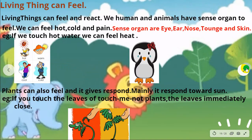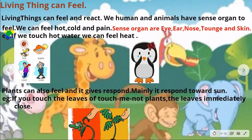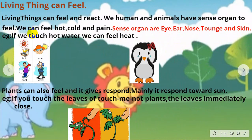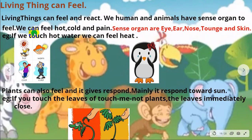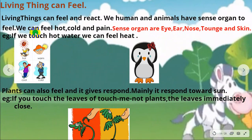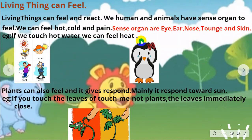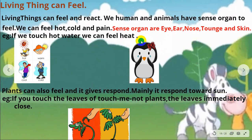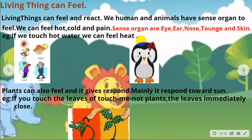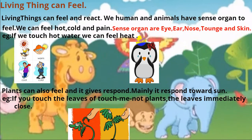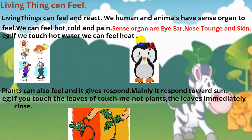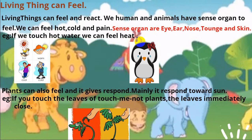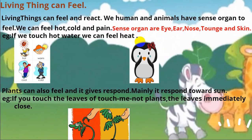Living things can feel and react. Humans and animals have sense organs to feel — eyes, ears, nose, tongue and skin. We feel hot, cold and pain. For example, if we touch hot water, we can feel the heat and pull our hand away.